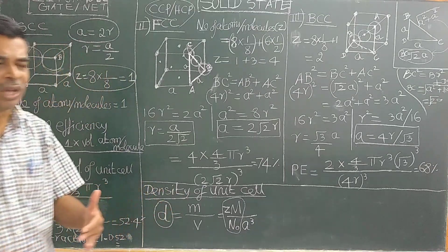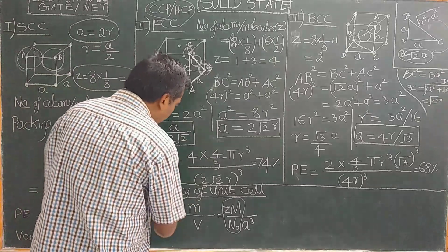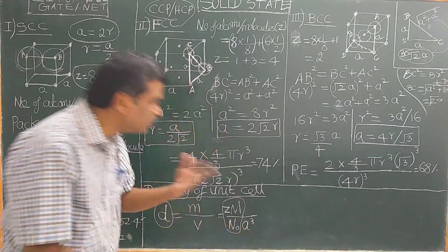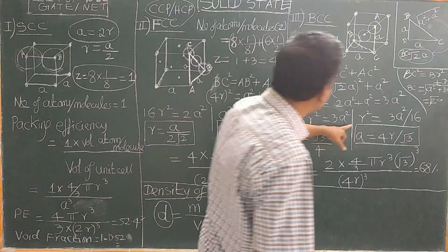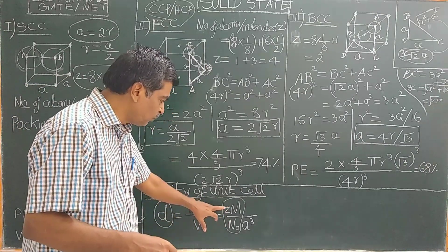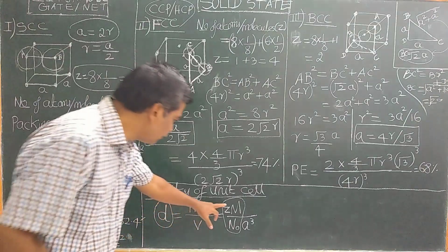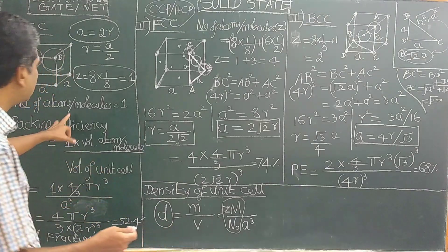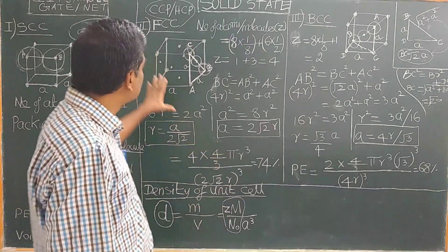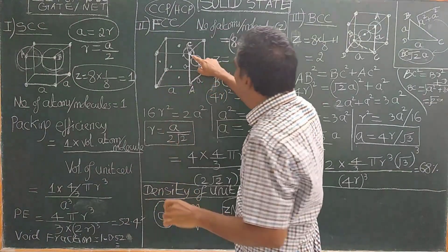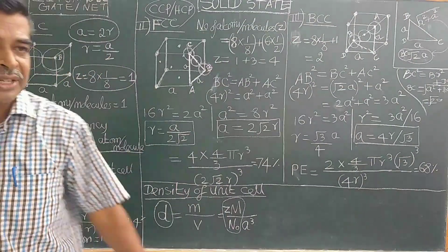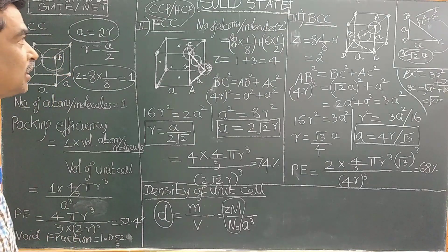Using this density formula, there are several questions asked. For example, if you are given the density and BCC lattice, and the radius of the atom, you can calculate A using A equals 4R/√3. From the Z value — if Z equals 1 it is simple cubic, Z equals 2 is BCC, Z equals 4 is FCC — you can identify the lattice type. Unless you understand how these formulas are derived, you won't be able to solve all the problems in solid state chemistry. Thank you for watching.